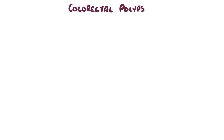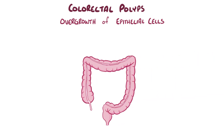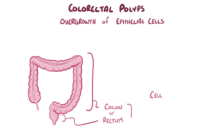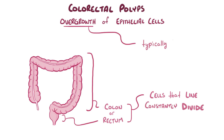A colorectal polyp is a small clump of epithelial cells that form a small bump or overgrowth of tissue along the lining of the colon or rectum. The cells lining the colon and rectum are constantly dividing, and typically when there's an overgrowth of tissue it's benign, but some can become malignant, meaning that the dividing cells can start invading nearby tissues over time.